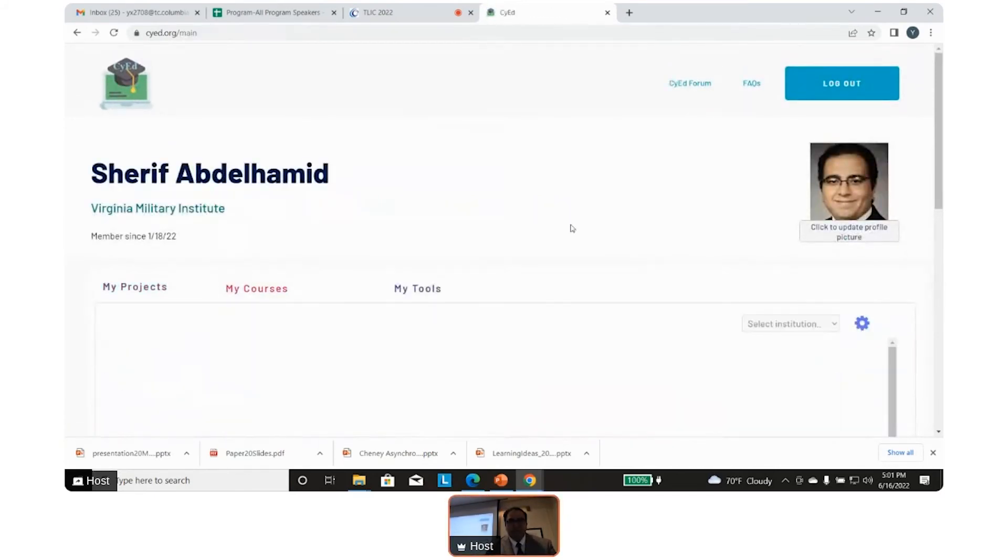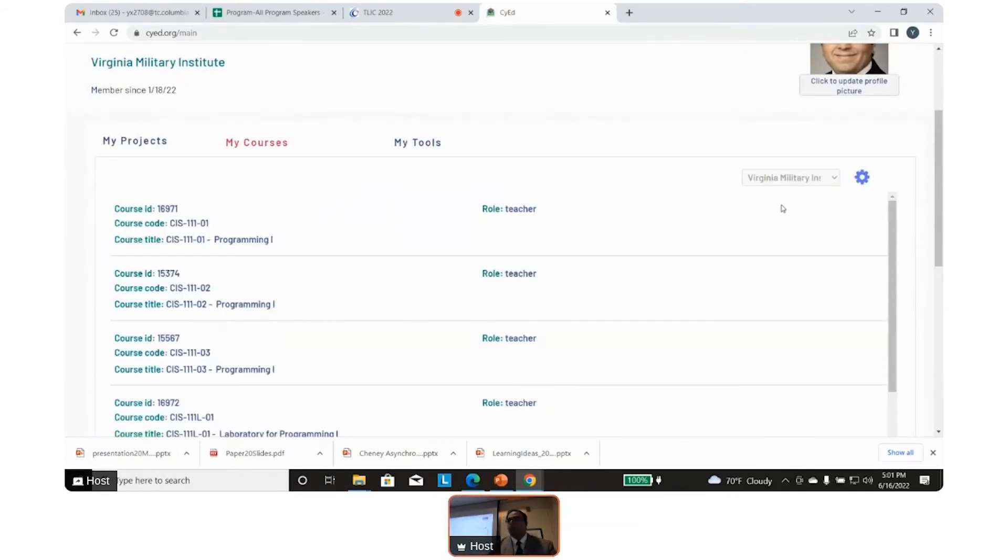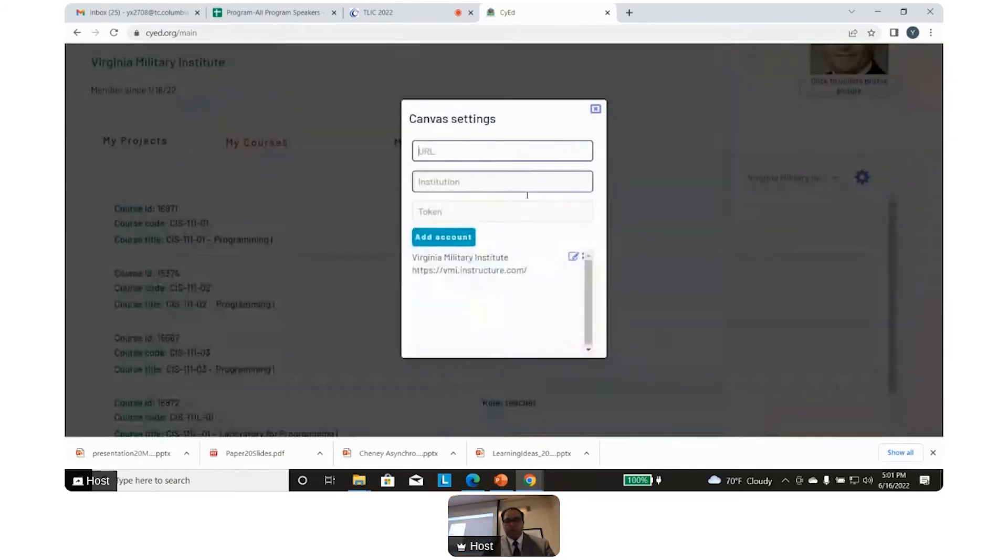You can here see the courses, choose VMI, and it will show the courses that I am enrolled in as a student or as a teacher. You can plug in new Canvas accounts. For example, I have an account with VMI, I have an account with Virginia Tech, so I can view all the courses from VMI and Virginia Tech in one place. This is a nice way to show a seamless integration of different learning management systems.